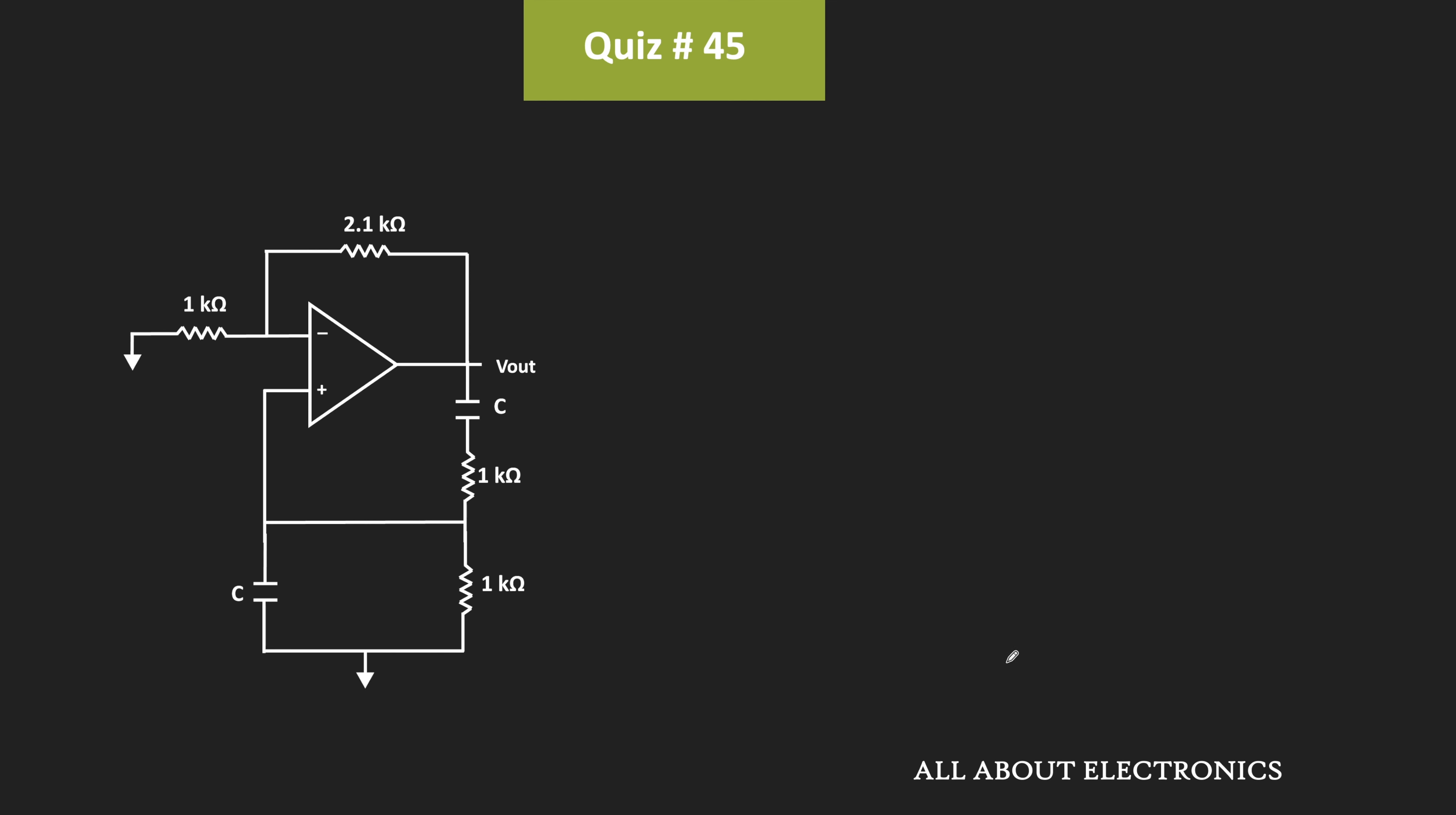From this equation, we can say that the required value of C is equal to 1 divided by 2π times 1 kΩ times f oscillation, that is equal to 2.45 kHz.